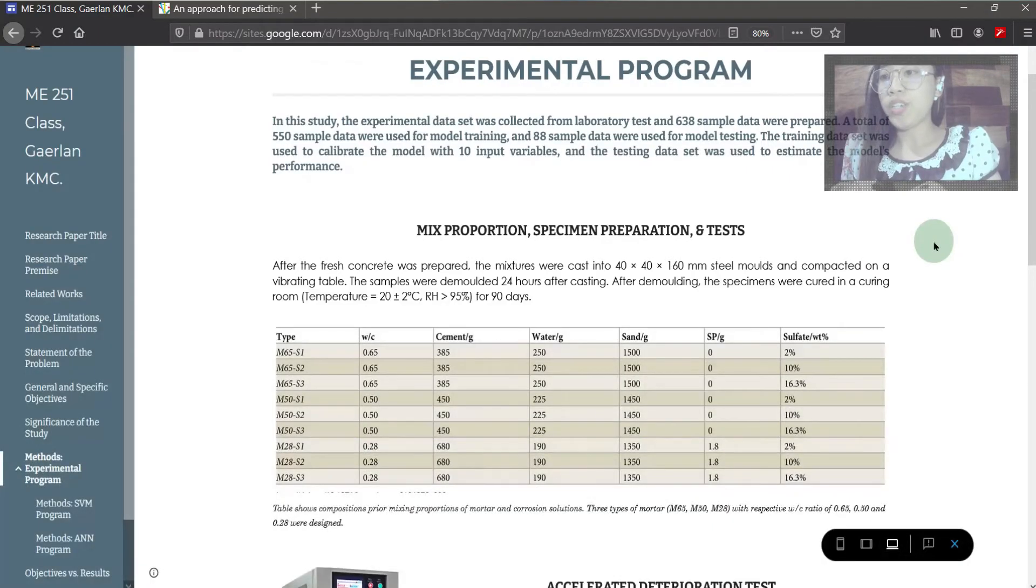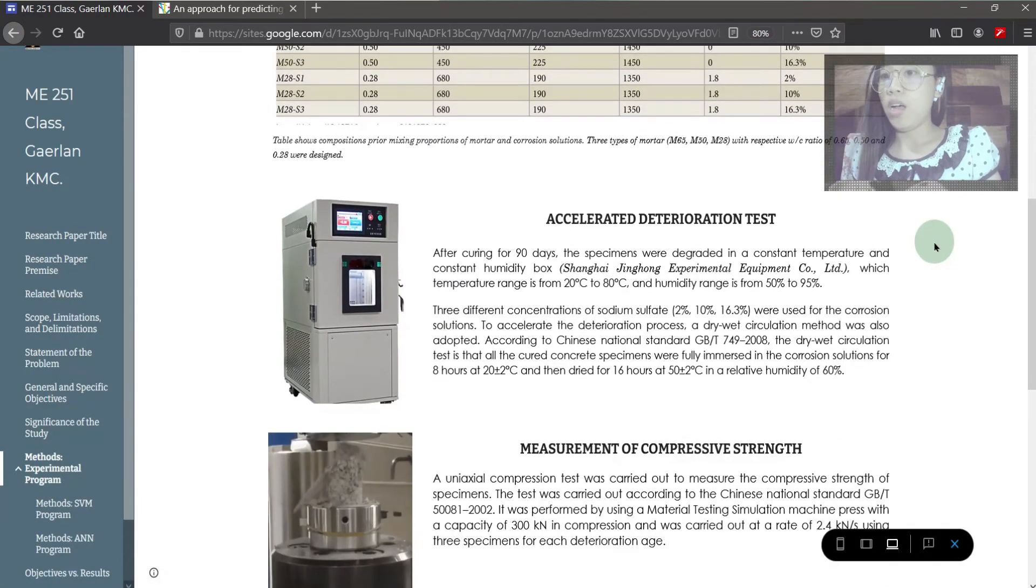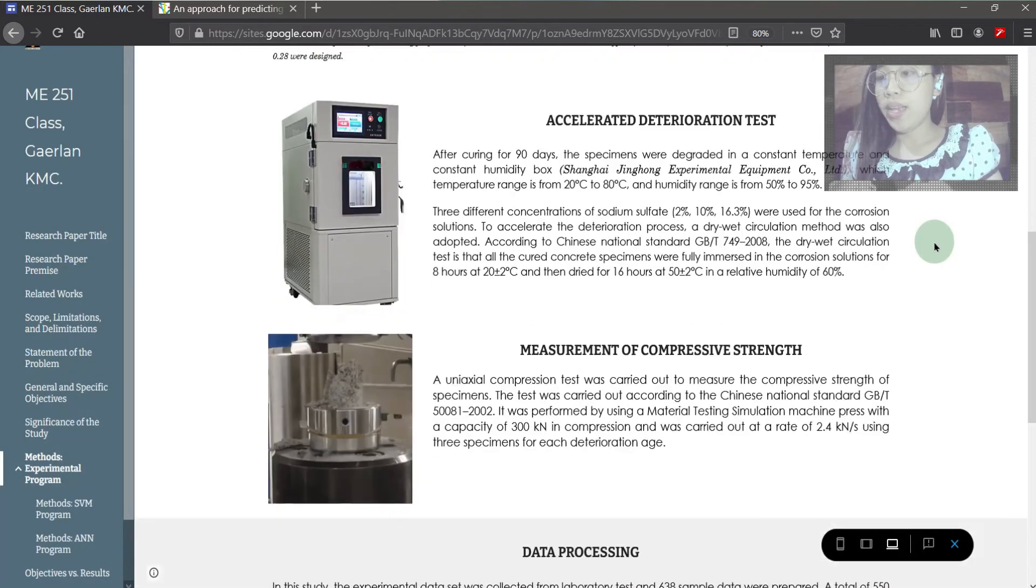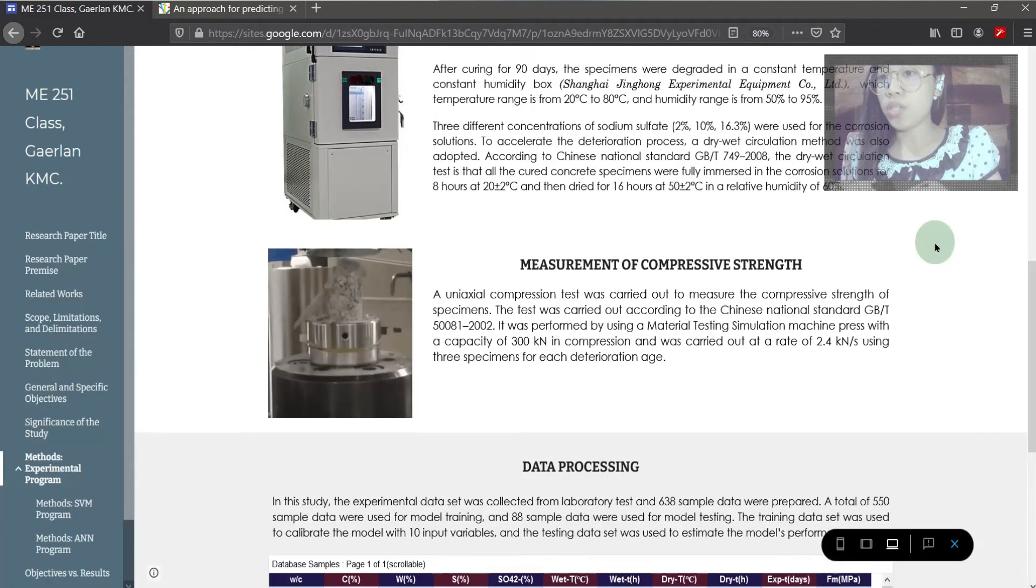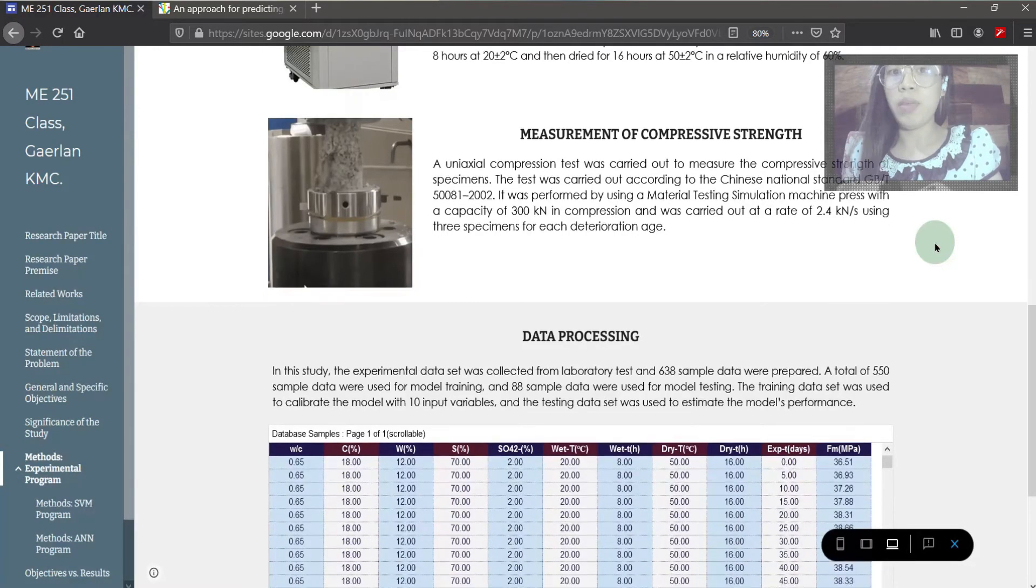Specimen preparation are stated as follows with the table shown prior to mixing proportions of mortar types with respect to 0.35, 0.50, and 0.28 water to cement ratio. Accelerated deterioration test was conducted after curing for 90 days. A dry-wet circulation method was also adopted. Then, uni-axial compression test was carried out in measuring the compressive strength with a capacity of 300 kN through material testing simulation.